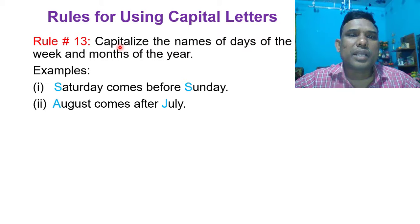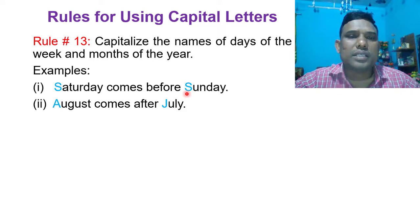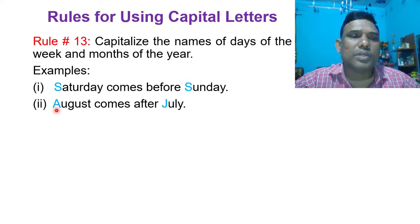Rule number 13: Capitalize the names of days of the week and months of the year. The first letter S in Saturday is capitalized because Saturday is the name of a day. The first letter S in Sunday is capitalized because Sunday is the name of a day. August comes after July — the first letter A in August is capitalized because August is the name of a month, and the first letter J in July is capitalized because July is the name of a month.